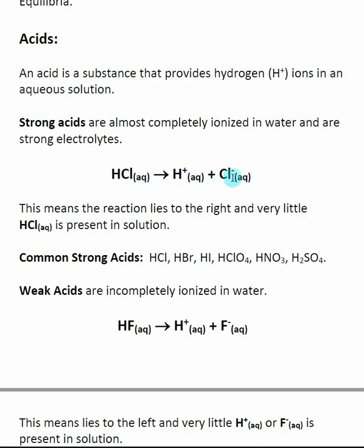Because HCl dissociates into ions, strong acids are considered strong electrolytes. When we say strong, it means that this reaction lies far to the right. If I put HCl into solution, there will be very, very little actual HCl remaining. This is going to come into play later on when we start calculating pHs, which has to do with the concentration of the hydrogen ion in solution.